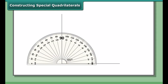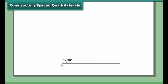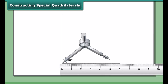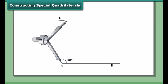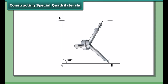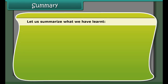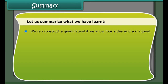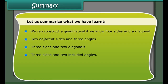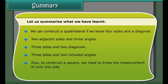Constructing special quadrilaterals — square: Draw a square of side 5 cm. We know that all angles are right angles and all sides are equal in a square. Steps: Draw a right angle at point A using a protractor or compass and ruler. Set the compass to 5 cm and cut off sides AB and AD along the arms of the right angle. With B as center and the same radius, draw an arc. With D as center and the same radius, draw an arc to cut the first arc. Join point C where the arcs meet to B and D to form the square.